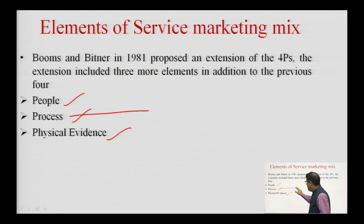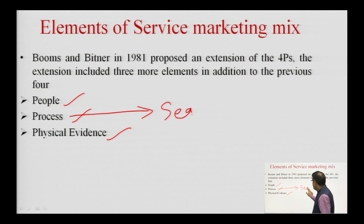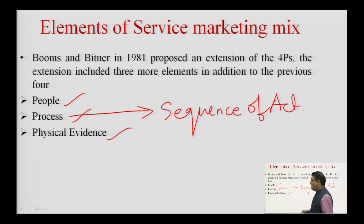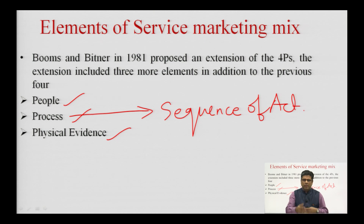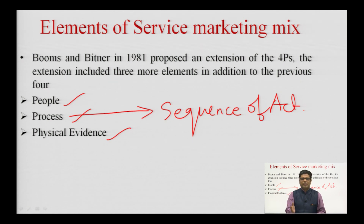There is also a process — defined as a sequence of activities which takes place in order to give the service to the consumer. For example, for opening a bank account, there is a sequence: we go to the bank, take the account opening form, fill it, attach required documents, submit them at the appropriate place, verification happens, and then we are given an account number. For every service, there is a process — a set routine of sequential activities followed for the customer to receive the service.